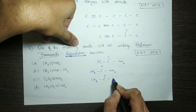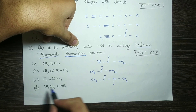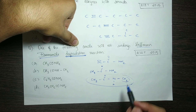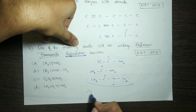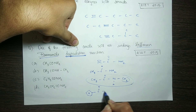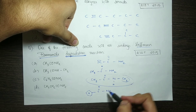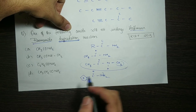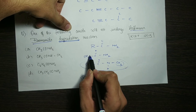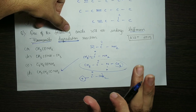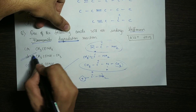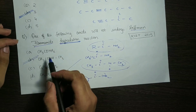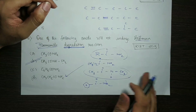CH3-C(=O)-NH-CH3: this is secondary because NH has one hydrogen replaced. C6H5-C(=O)-NH2 is primary. The requirement for Hofmann degradation is the R-CO-NH2 form, but option B is R-CO-NHR', which is secondary. So option B is the correct answer — it will not undergo the reaction.